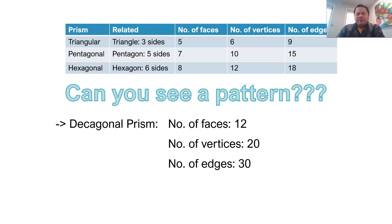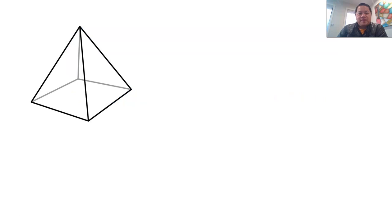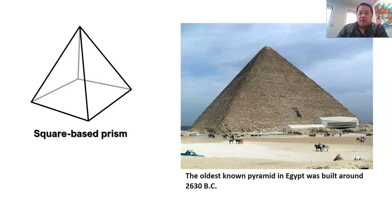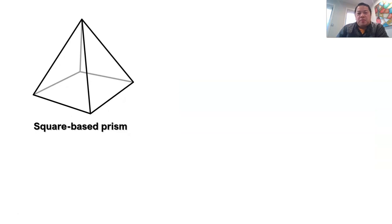Let's move on to pyramids. This is a square base pyramid. The well-known pyramids are, of course, the pyramids in Egypt. I did a quick research and it seems there are 160-plus pyramids that can be found scattered all over Egypt. The oldest known pyramid was built around 2630 BC — very old — and imagine the kind of technology they had back then to build such an enormous structure. It definitely wasn't easy.